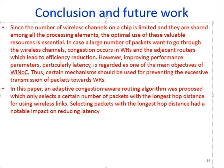In conclusion, an adaptive congestion-aware routing algorithm was proposed which selects a certain number of packets with the longest hop distance for using the wireless link. Selecting packets with the longest hop distance had a notable impact on reducing latency. Since the number of wireless channels on chip is limited and shared among all processing elements, optimal use of these resources is essential. Congestion in wireless and adjacent routers leads to efficiency reduction, so mechanisms should be used to prevent excessive packet transmission toward wireless routers.